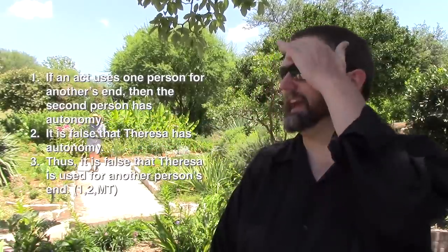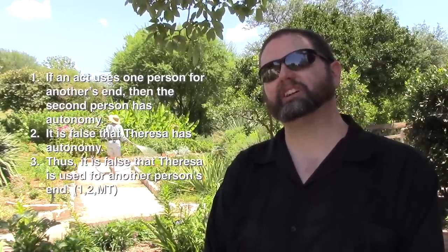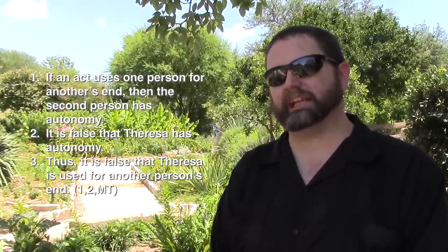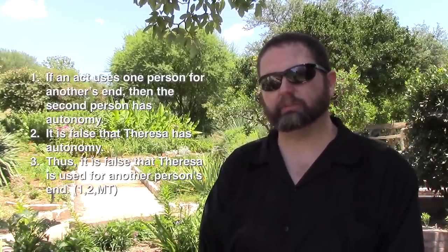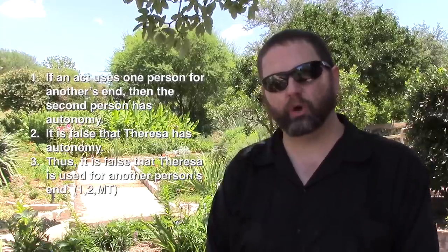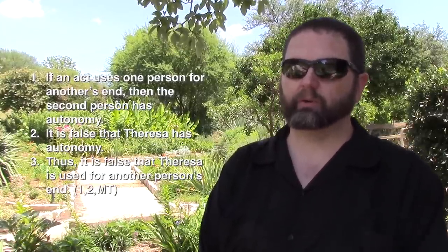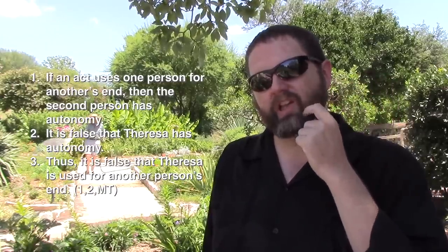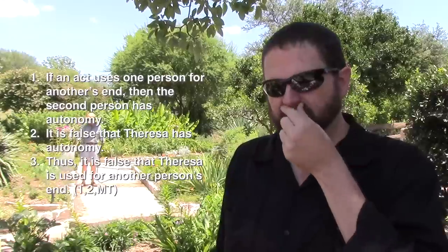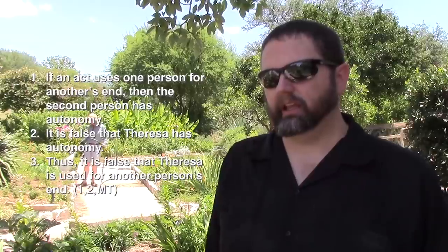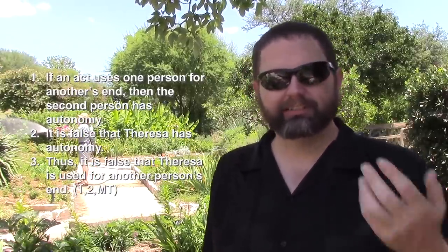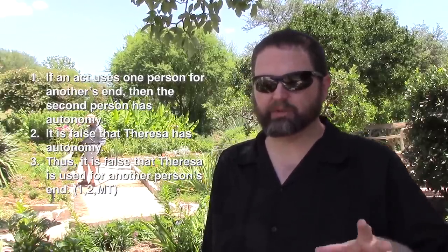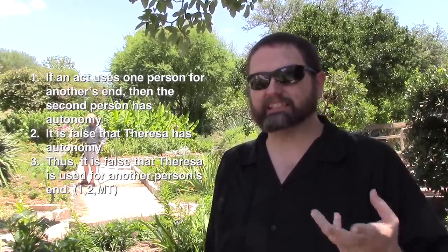This is kind of an extreme conclusion, mostly because it doesn't really matter what you're doing with Teresa — she can't be used. Some really scary scenarios start coming to mind. Rachel's claim is that Teresa can't be used because she doesn't have autonomy. Look at the parenthetical notation — this comes from the first and second premise, and this time we're using modus tollens. Modus tollens is: if P then Q, we know not-Q, therefore we know not-P. For example: if an animal is a dog, then it's warm-blooded; Jaws the shark is not warm-blooded; therefore Jaws is not a dog. Rachel's point is that baby Teresa does not have autonomy, so she can't be used.